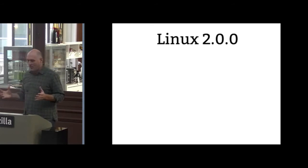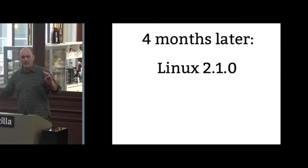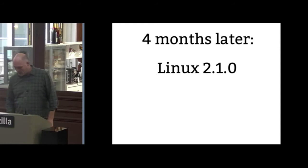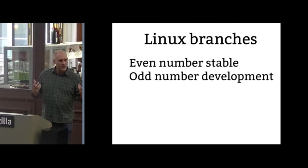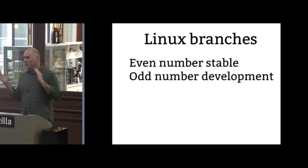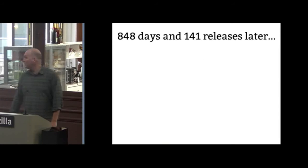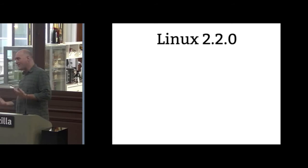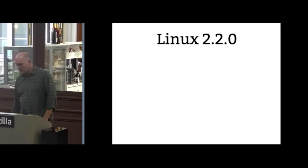So we said, hey, this is a nice stable kernel. Let's go off and do this, and then we split off and did a development tree. Four months later we said things are nice and stable. Good enough for now. Let's do a development kernel. Odd numbers are going to be development kernels, even numbers are more stable — nice easy thing to remember. But almost two and a third years later we actually got a stable kernel. So nobody had a stable kernel for over two years, and it was okay because not many people were using Linux. This was about 1999.